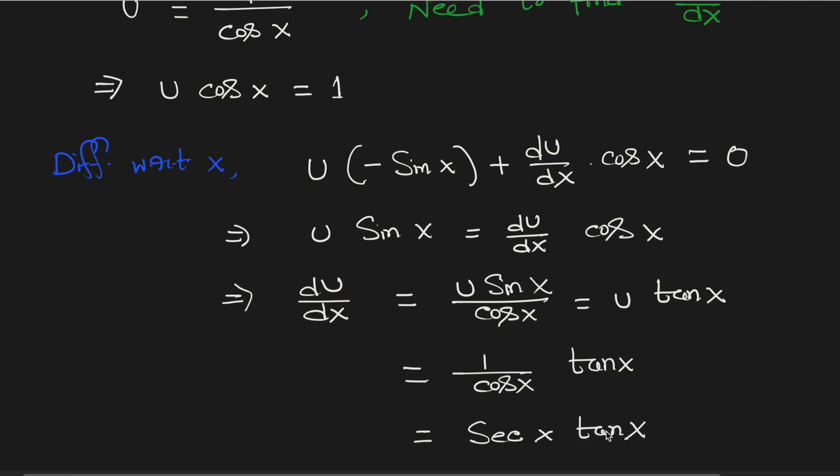So finally we get the derivative of 1 over cosine x which is equal to sec x times tan x. And this is our final answer. Thank you for watching.